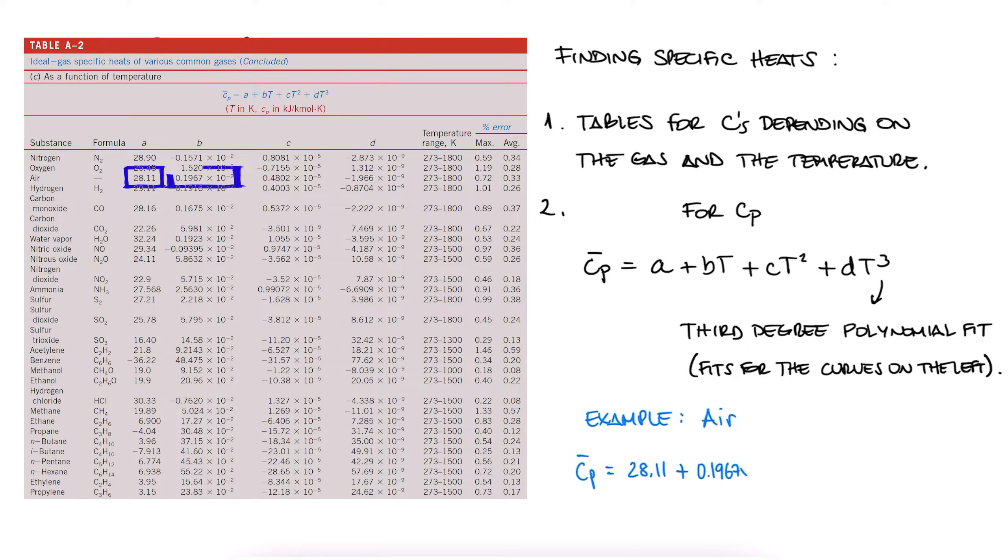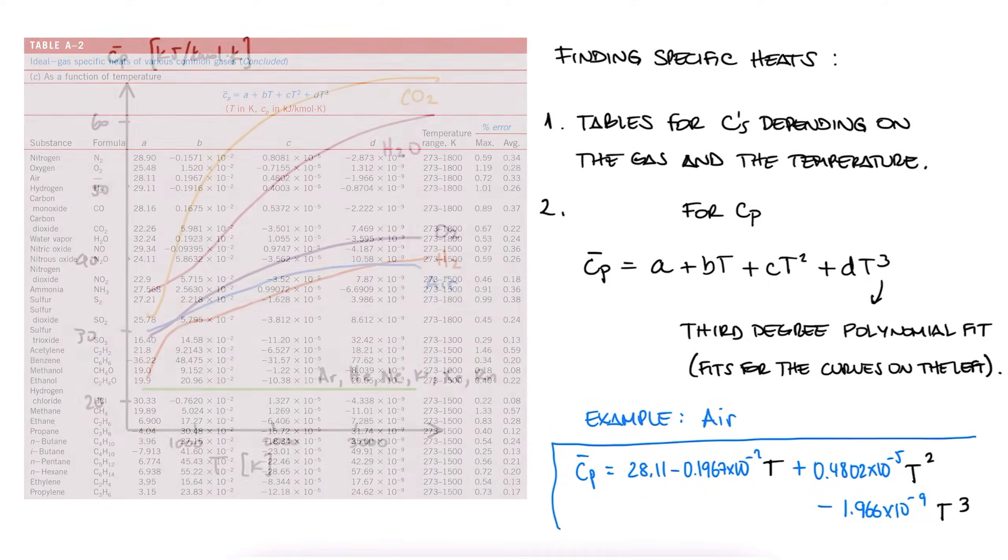You substitute the A, B, C, and D coefficients for a specific substance, and you get an expression for Cp bar in terms of T. You then plug in your temperature and find the molar specific heat for constant pressure.